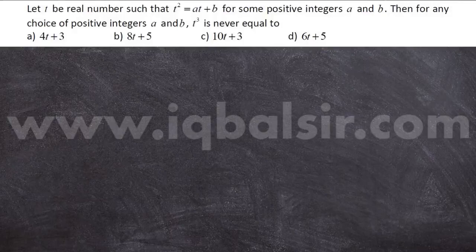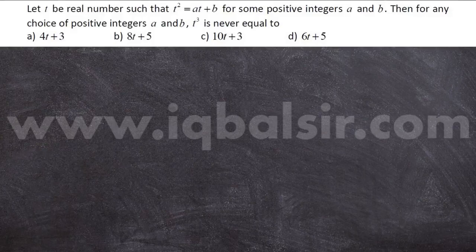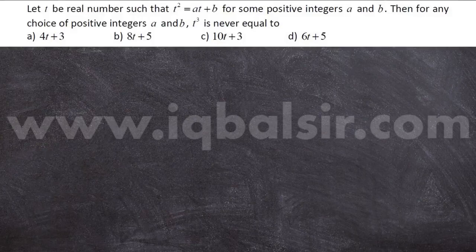Let t be a real number such that t squared is equal to at plus b for some positive integers a and b. Then for any choice of positive integers a and b, t cubed is never equal to...